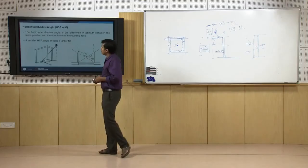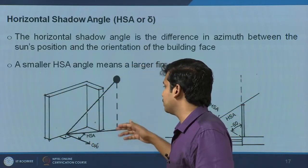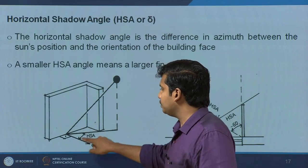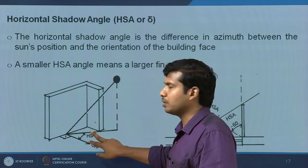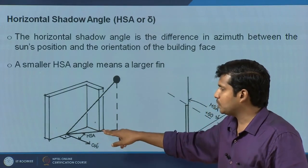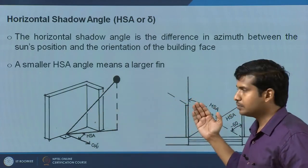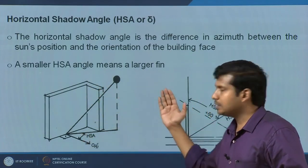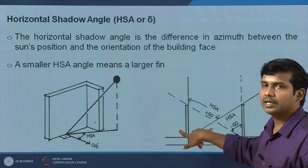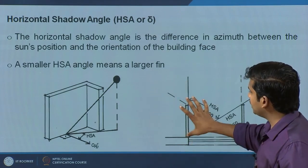Apart from altitude and azimuth, three other parameters are important: wall or surface azimuth angle (the orientation of the wall), horizontal shadow angle, and vertical shadow angle. The horizontal shadow angle is the difference between the solar azimuth and the wall azimuth — it takes into account the orientation of the wall surface. A lesser horizontal shadow angle means the projection required for vertical shading extends further out. The effectiveness of a vertical shading system is given by the horizontal shadow angle.